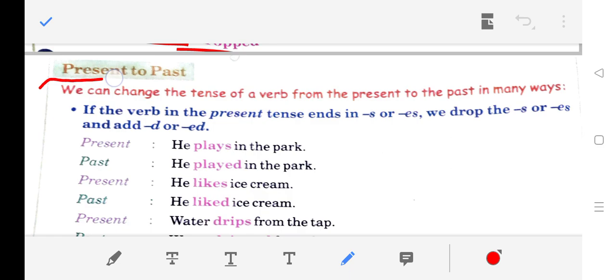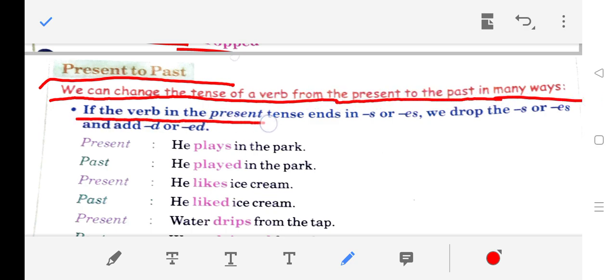Present to Past: We can change the tense of a verb from the present to the past in many ways. If the verb in the present tense ends in 's' or 'es', we drop the 's' or 'es' and add 'd' or 'ed'.